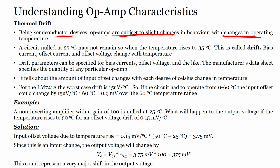A circuit nulled at 25 degrees may not remain so when the temperature rises to 35 degrees. This is called drift — bias current, offset current, and offset voltage all change with temperature. We have to understand that if nulled for one temperature, it may not be nulled for another. The drift parameters can be specified for bias current and offset voltage; the manufacturer data sheet specifies how much input offset changes with each degree centigrade change in temperature.